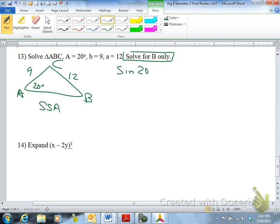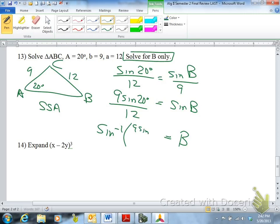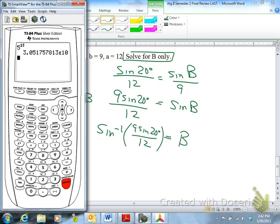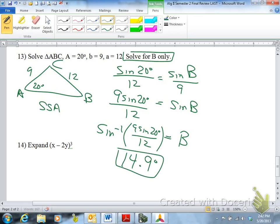So you'd have sine of 20 over 12 equals sine of B over 9. And when you solve for B, you'd have sine B equals 9 sine 20 over 12. And then you'd have B equals the inverse sine 9 sine 20 over 12. Which would be 14.9. 14.9 degrees. And the directions said only to solve for B. So we won't solve for the other stuff. For the other stuff, you just do law of sines again. Or subtract 180 minus 34.9 would be angle C.